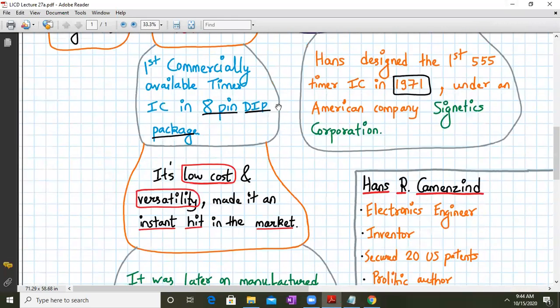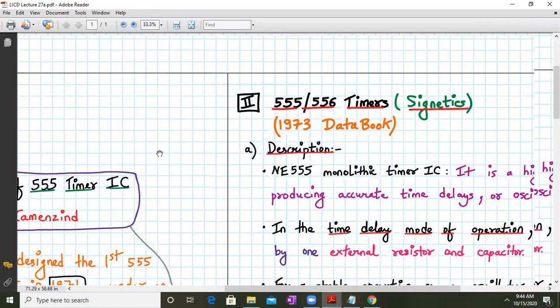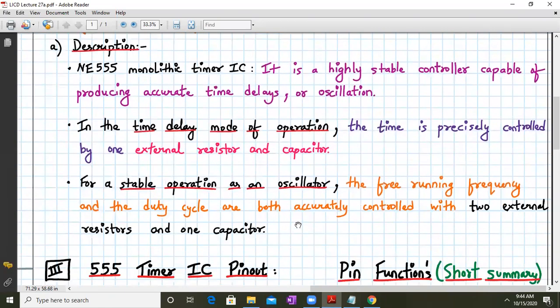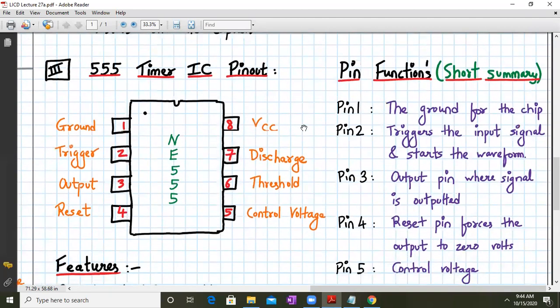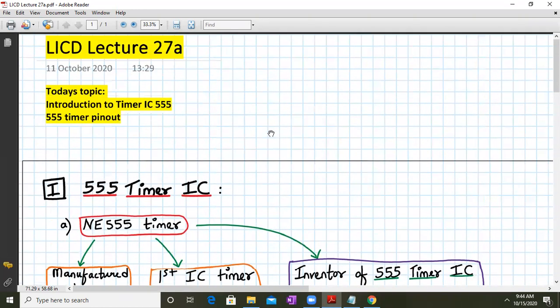So in this lecture, we have described the 555 timer history, which year it was commercialized, who was the inventor, a little history on the inventor. And we have also seen the 1973 data book. And we have seen some descriptions. And finally, we have gone through the 555 timer IC pin out and some of the pin functions in brief. Okay. So that's it for today's lecture. Next, we will see the internal structure of 555 timer. So until then, have a good day and thank you.